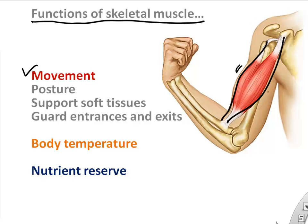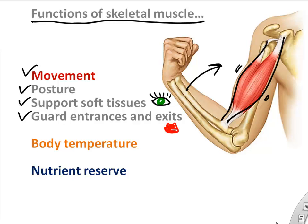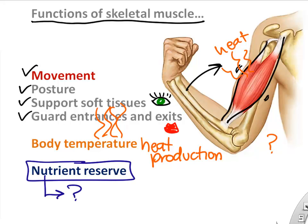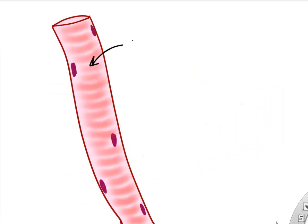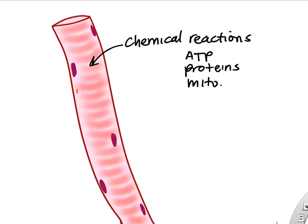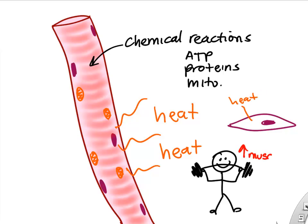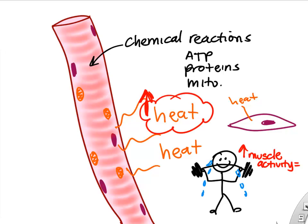The functions of skeletal muscle include moving our bones, helping posture, guarding entrances like our eyes and lips, supporting soft tissues, and regulating body temperature. We might not think about heat production, but since muscle cells can be very active, they produce a lot of heat. All chemical reactions — including those inside mitochondria to make ATP — generate some heat, and we notice it especially during heavy muscle use when our body heats up and we begin to sweat.